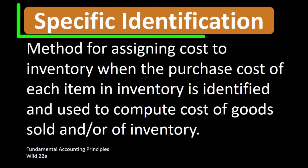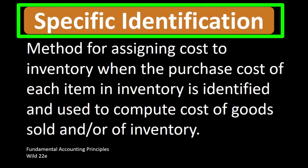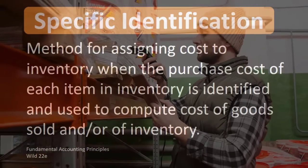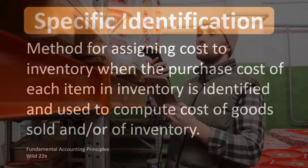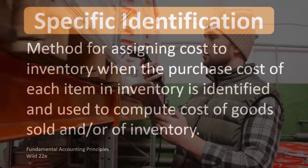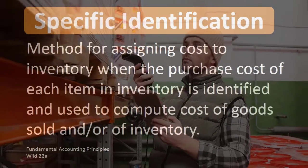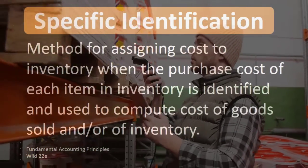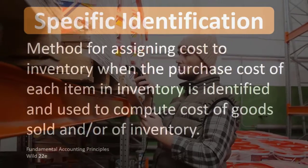Specific identification is an inventory method where we track inventory by assigning the exact specific cost to an exact specific inventory item.